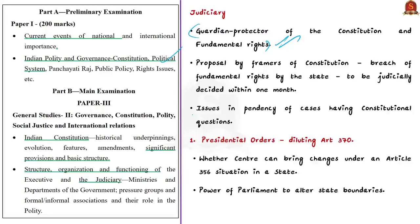When a fundamental right is breached by the state, during framing of the Indian Constitution it was proposed that any petition alleging a breach of fundamental rights should be judicially decided within one month. Though this suggestion was not added to the text of the Constitution, it highlights the importance of deciding rights-based questions within a specified time frame. This is important because the violation is costless for the state while the individual pays the price. The author gives examples of cases involving crucial questions about state power, accountability, and impunity.